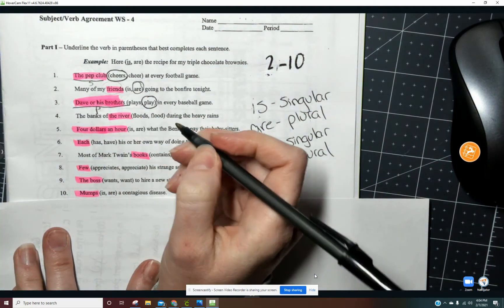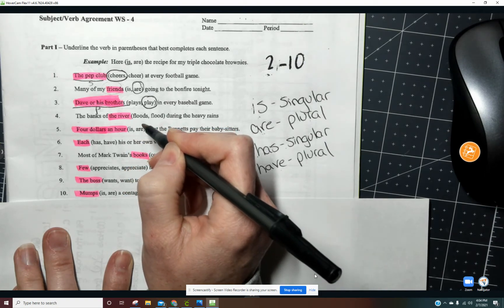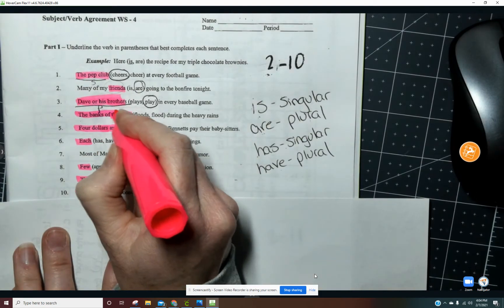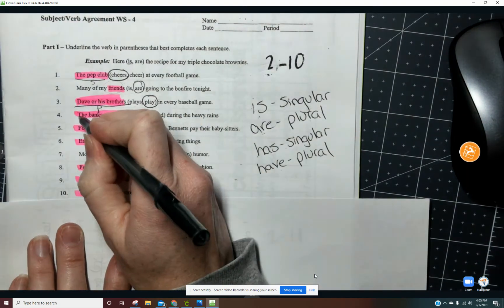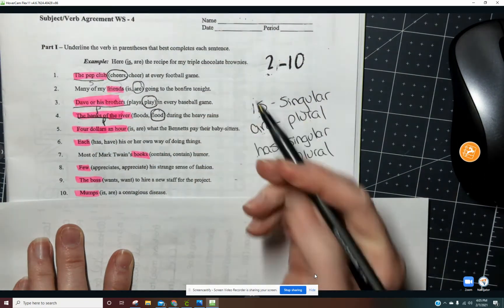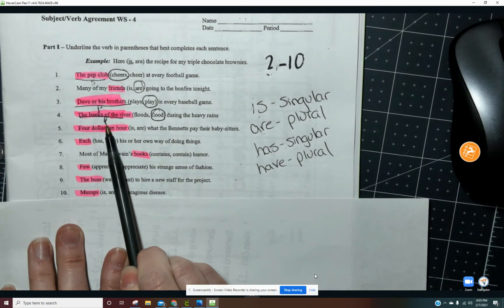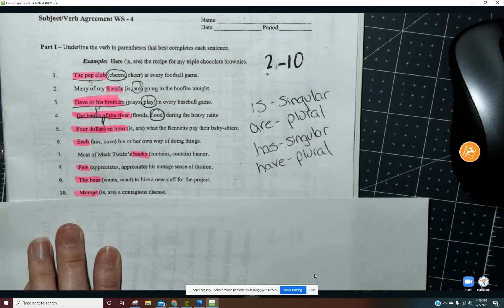The banks of the river, the river, one. Oh no, I made a mistake. It's the banks. So there's more than one. There's a bank on each side. So this again is plural and so it needs to be flood because there's more than one. This is plural. The banks of the river flood during the heavy rains.